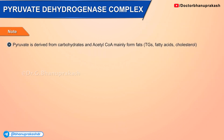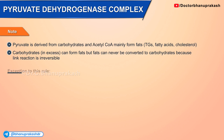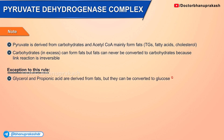Note: pyruvate is derived from carbohydrates, and acetyl coenzyme A mainly from fats, which include triglycerides, fatty acids, and cholesterol. Carbohydrates in excess can form fats, but fats can never be converted to carbohydrates because the link reaction is irreversible. An exception to this rule are glycerol and propionic acid, which are derived from fats but can be converted to glucose.